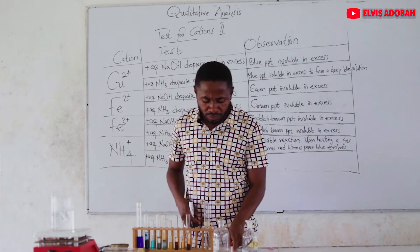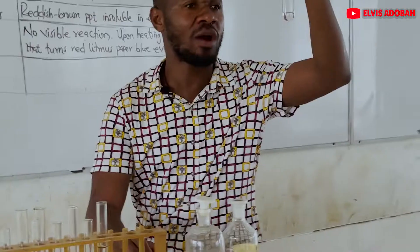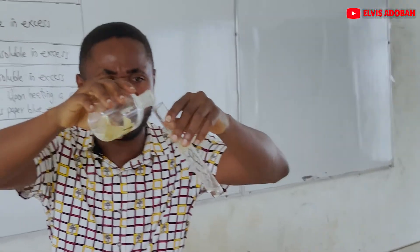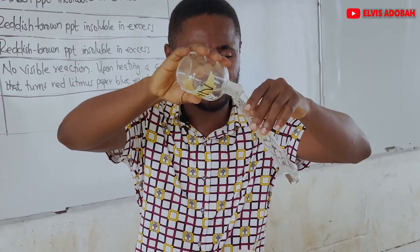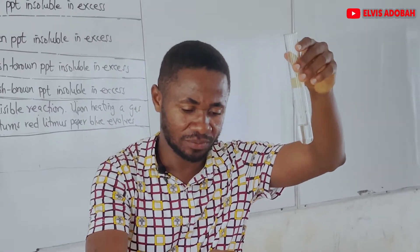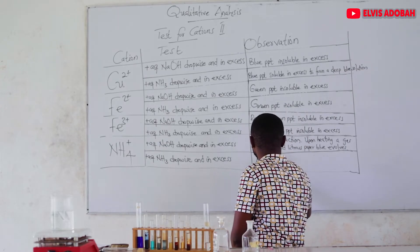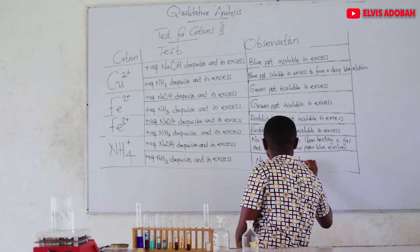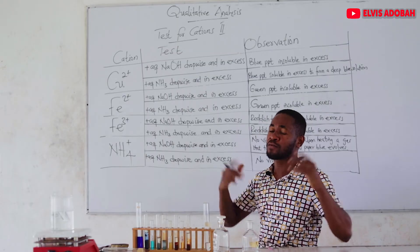Secondly, we take our last sample and add aqueous ammonia dropwise, then in excess — and there is still no visible reaction, or you can write: no precipitate formed.